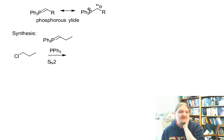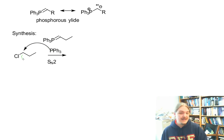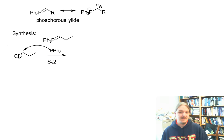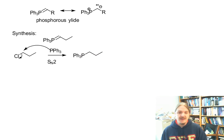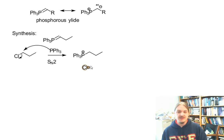Though other phosphines can be used, triphenylphosphine tends to be the phosphine of choice. Phosphines are the phosphorus analog of amines — it's just a phosphorus with three hydrocarbon groups on it. This turns out to be an SN2 reaction, which means it has all of the strengths and limitations of the SN2 reaction. Initially we've only displaced the chlorine; the phosphorus has a positive charge and we still don't have the negative charge or the nucleophilic center on the carbon.